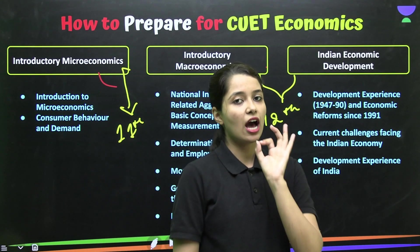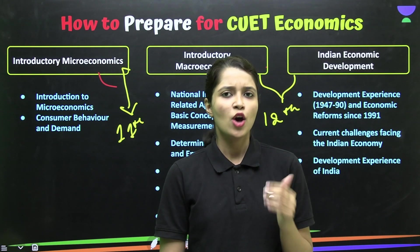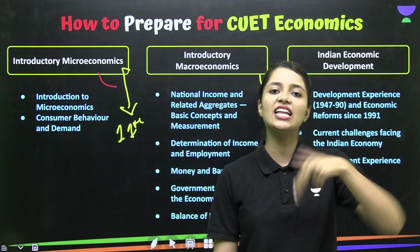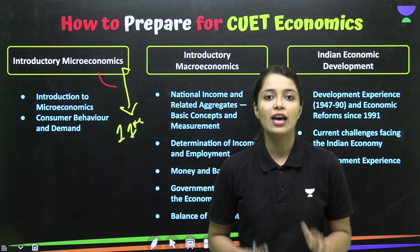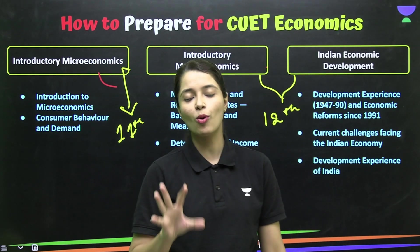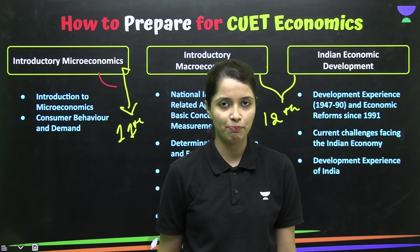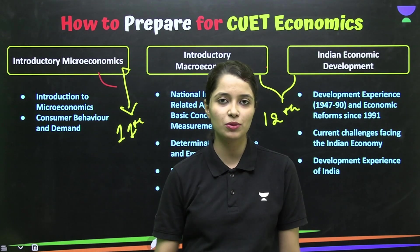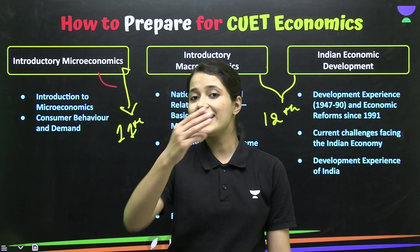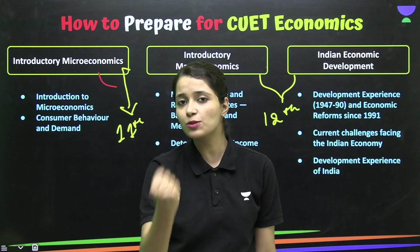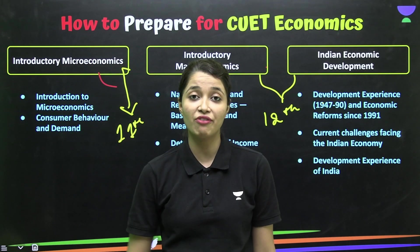So accordingly, we have understood one thing: if we have to prepare for CUET, it would be better that we strengthen our 11th and 12th class base. There are many benefits. First, you will get the best marks in your 12th class. Second, you have prepared for CUET. Third, your base is made throughout your life and you will be able to use it.